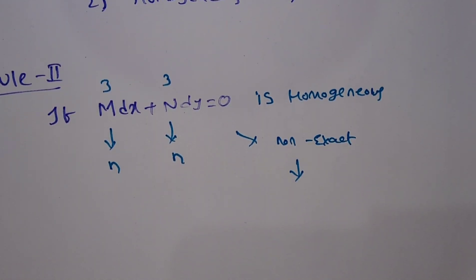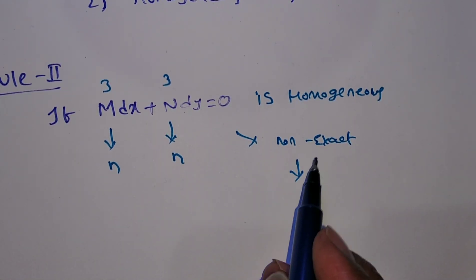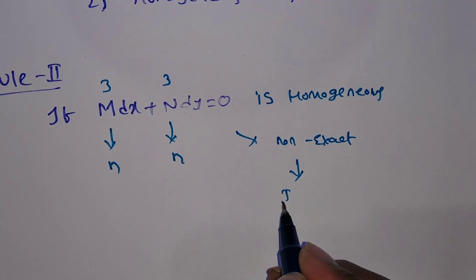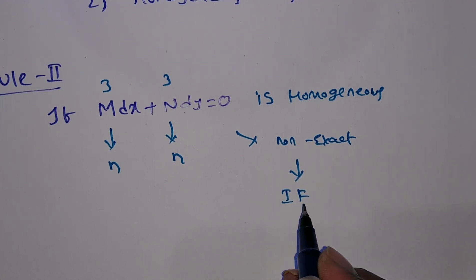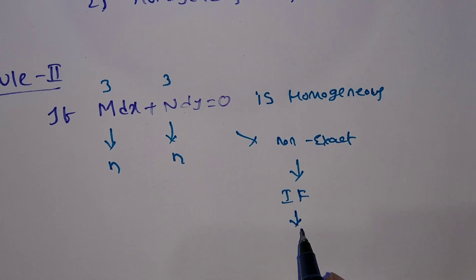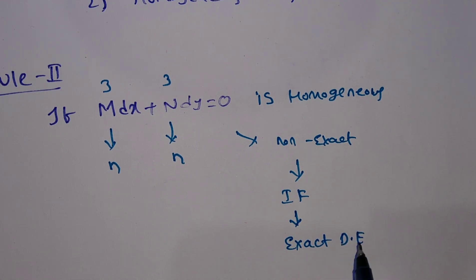How do you make a non-exact differential equation into an exact one? We have to multiply by a suitable factor called the integrating factor. If you multiply by the integrating factor, it becomes an exact differential equation.